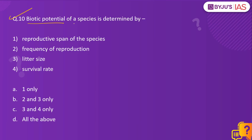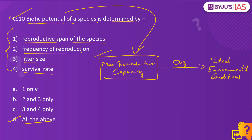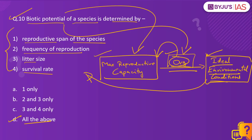Coming to the last question: Biotic potential of a species is determined by — reproductive span of the species, frequency of reproduction, size of the litter, and survival rate. All four are correct, so option D is the right answer. Biotic potential is the maximum reproductive capacity of a particular organism under ideal environmental conditions. This is a measure used by ecologists to understand the strength of an organism in an ecosystem. This maximum reproductive capacity is based on four key factors: the total reproductive span of the species, the frequency of reproduction, the size of the litter, and the survival rate of the litter. With this, let's conclude our discussion for today. Thanks for watching.